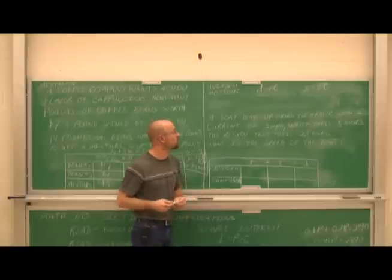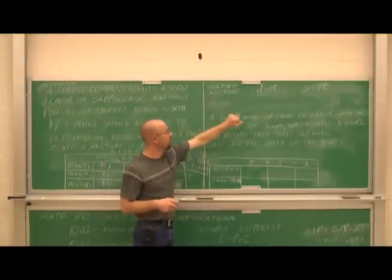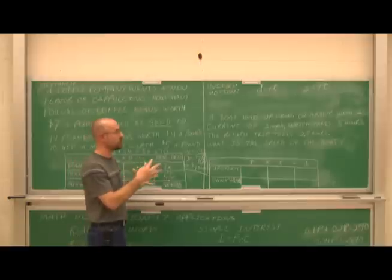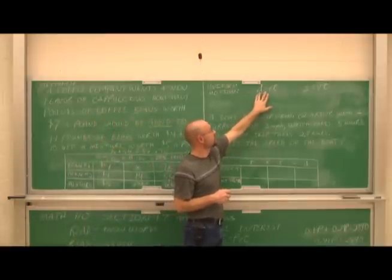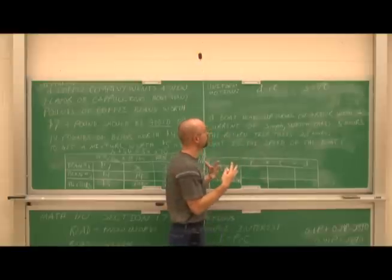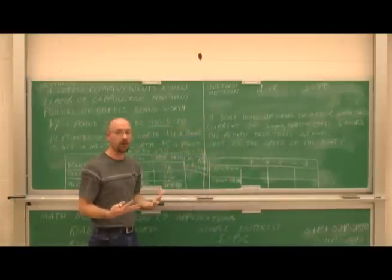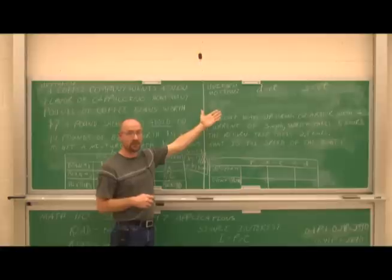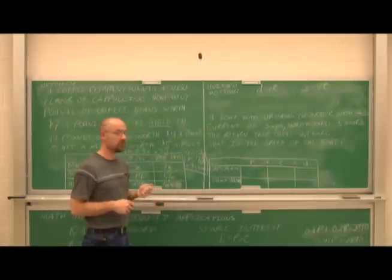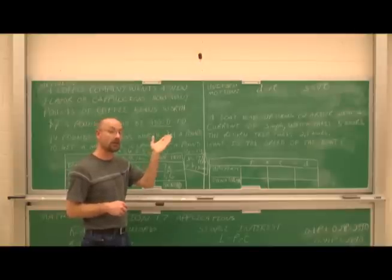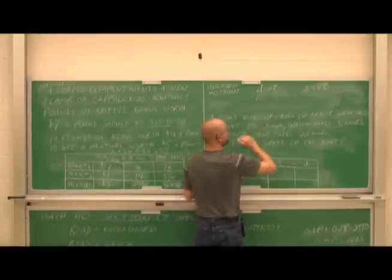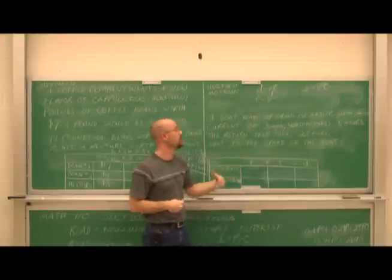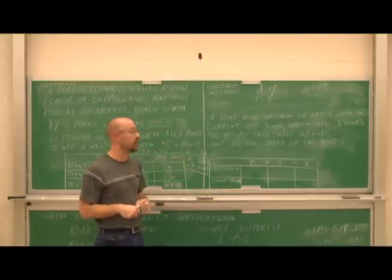Let's move on to the next example: uniform motion. The equation we need is distance equals rate times time — D = R × T. This equation comes up every day. If you drive, you see it every time you read your speedometer. Your speedometer reads in miles per hour — that is a variation of this equation. Rate equals miles — a distance — per hour — a unit of time. If you solve D = RT for R, you divide both sides by T, giving R = D/T.